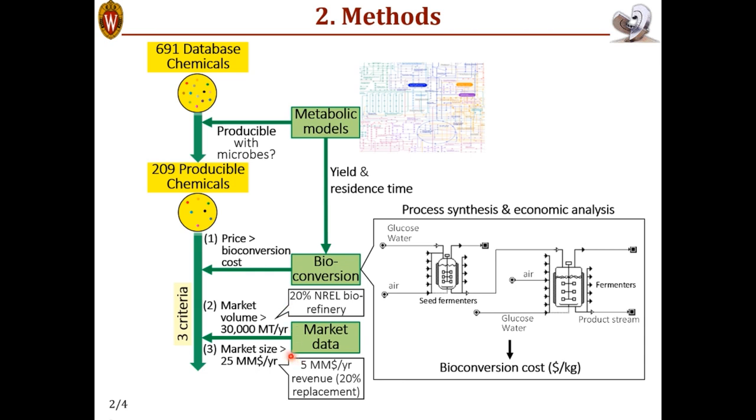The third criterion is based on market size, which is the price times the market volume. And this has to be large enough to meet revenue expectations to, for example, recover capital investment. In this example, we choose a minimum of $5 million annual revenue.